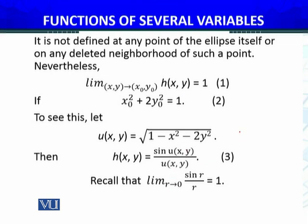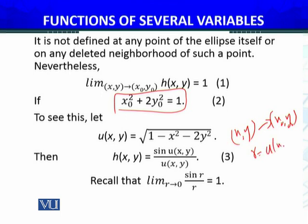u(x,y) will be a real number. Then from analysis one recall that limit as r approaches to zero. When (x,y) approaches to (x₀,y₀) of the boundary point which satisfies this one, iska matlab hai ke agar mein r rakhlu u(x,y) ko, to r approaches to zero. Analysis one mein humne yeh kiya ho hai ke sin(r)/r whenever r approaches to zero, iska limit jo hai woh one hoti hai.